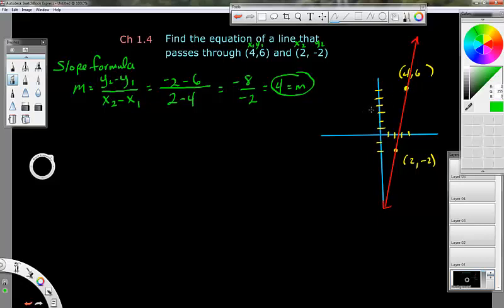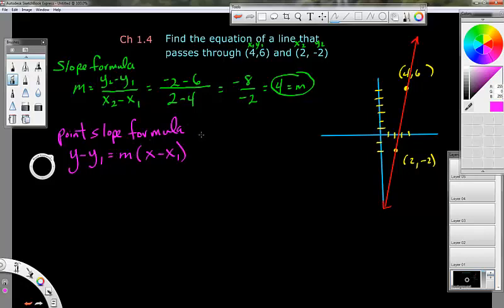The next equation is called the point-slope formula. Y minus y1 equals m times x minus x1. That is the point-slope formula. You use this when you have a point and a slope. I know that's why it's called the point-slope formula, but you use it when you have a point and a slope, and I have a point - I have two points to choose from - and a slope.